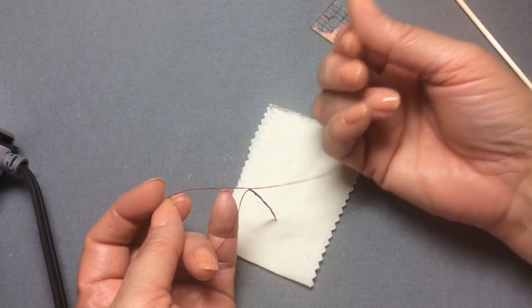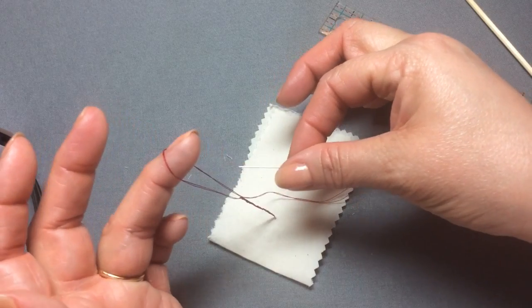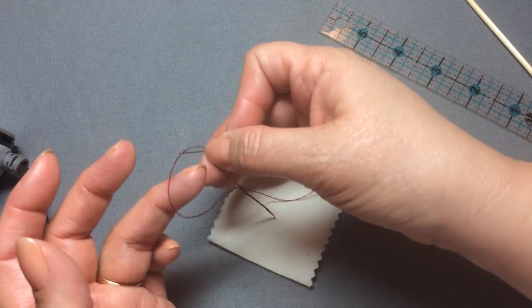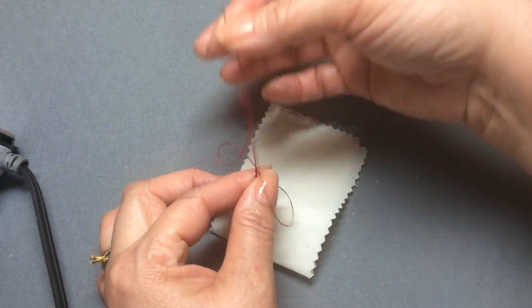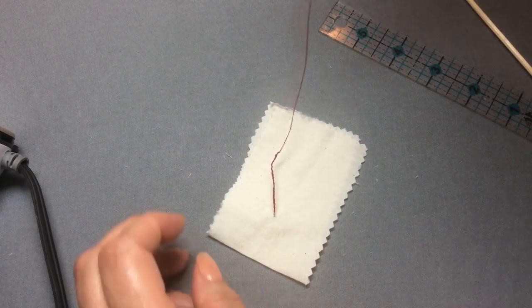Now because I don't want to keep it as a chain stitch, I'm going to put my needle through that loop. When I pull through this time, my chain is locked and it's not going to come out.